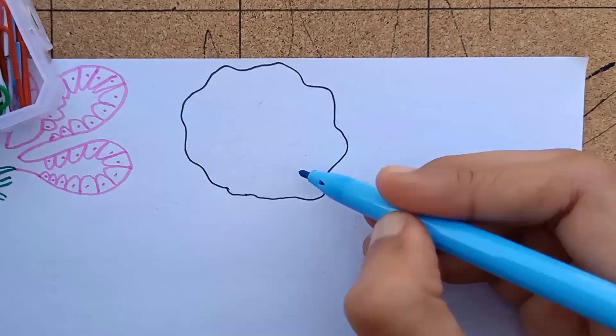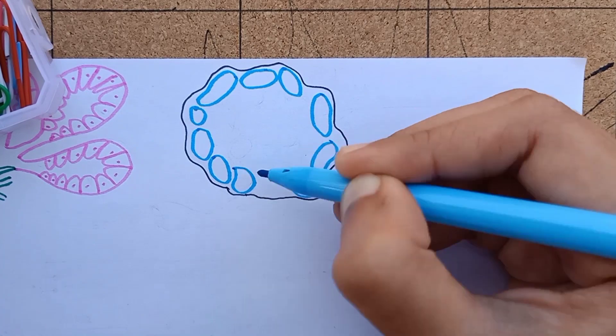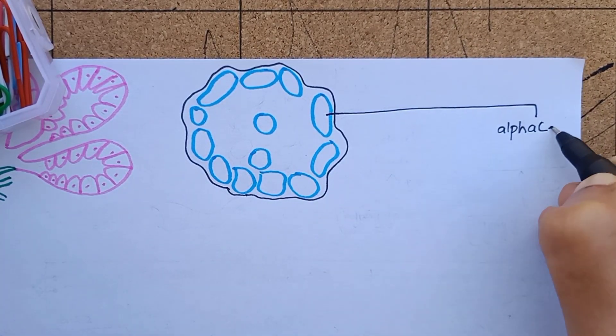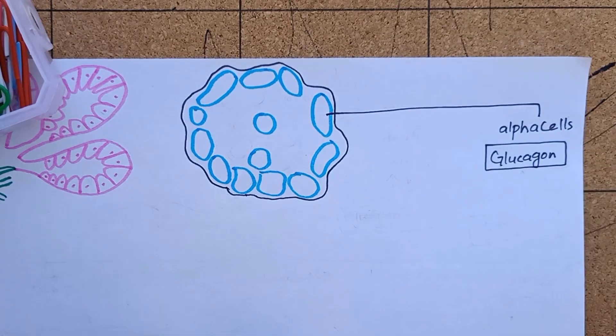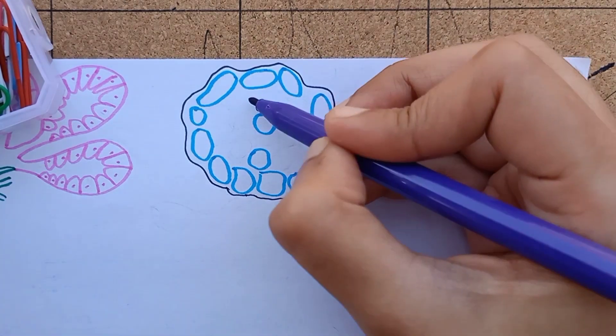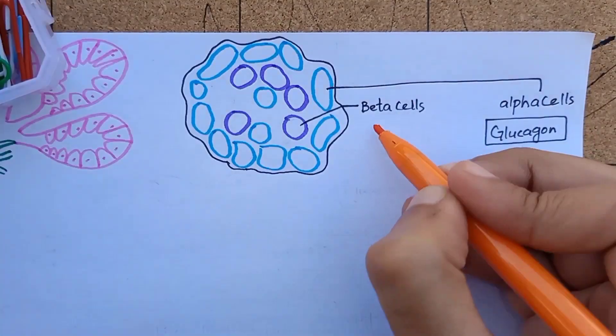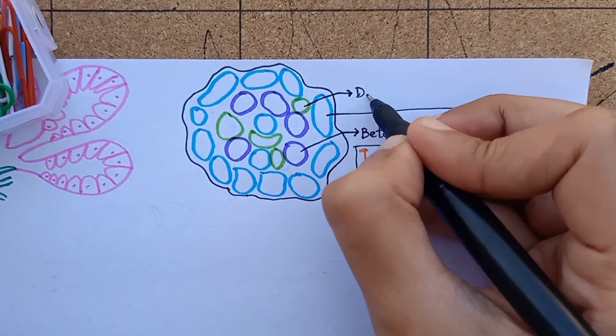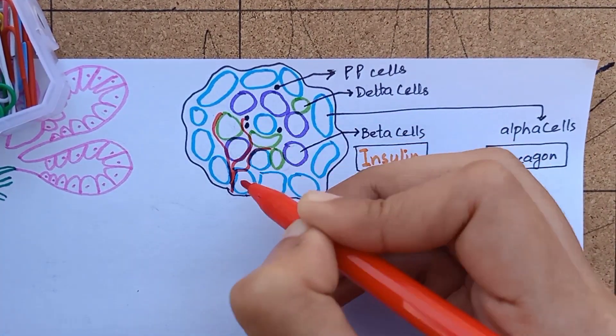The endocrine portion of pancreas are the islets of Langerhans that make only 10% of pancreas. These islets consist of alpha cells which secrete glucagon. You can remember that because there is an A in glucagon and there is an A in alpha cells. There are beta cells that secrete insulin. Then there are delta cells which secrete somatostatin, and there are few PP cells which secrete pancreatic polypeptide.